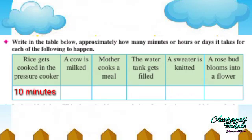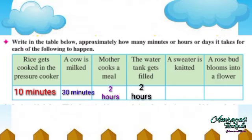A cow is milked — 30 minutes. Mother cooks a meal — two hours. The water tank gets filled — two hours. A sweater is knitted — seven days. A rose bud blooms into a flower — three days.